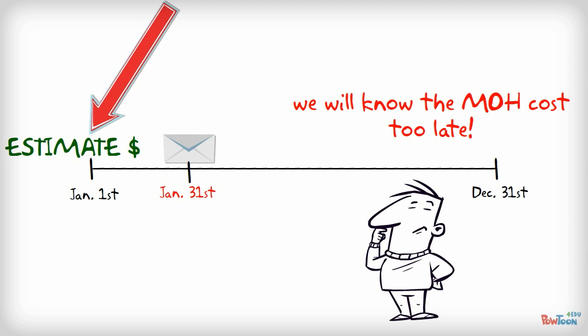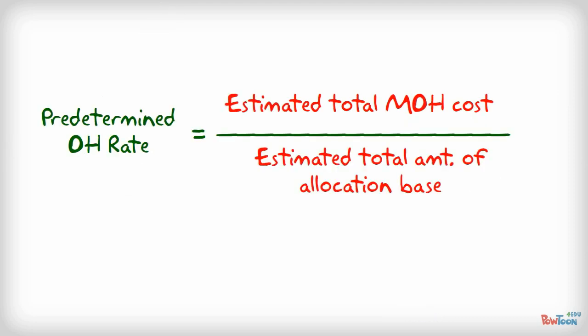This is the formula we will use to apply the manufacturing overhead. First we need to estimate the total manufacturing overhead cost, and then estimate the total amount of allocation base. These would usually be machine hours or direct labor hours.